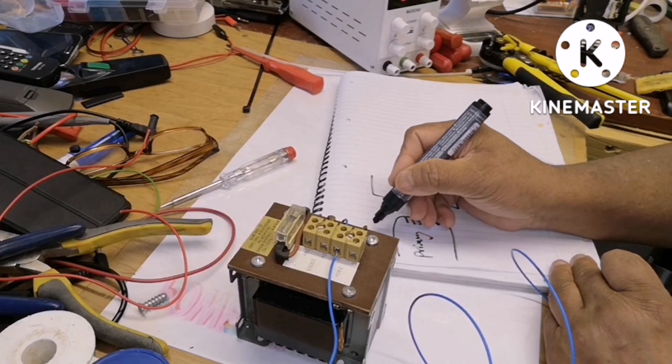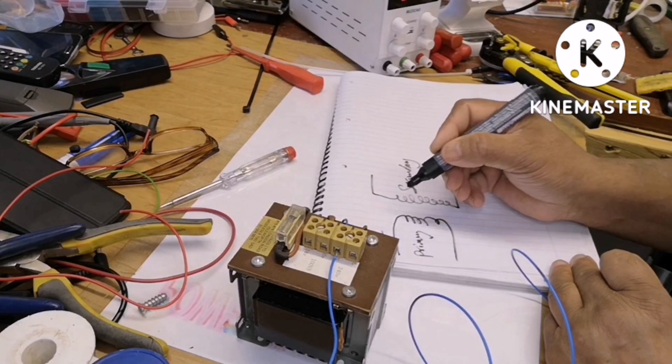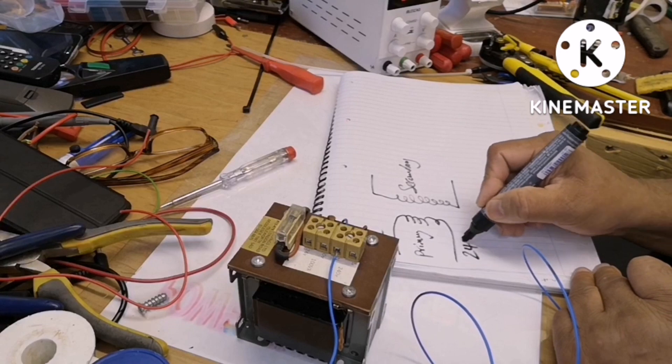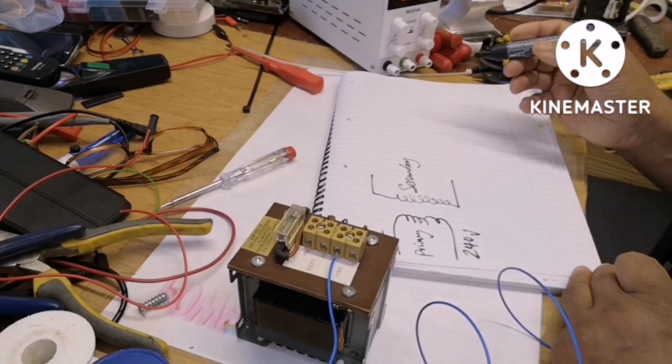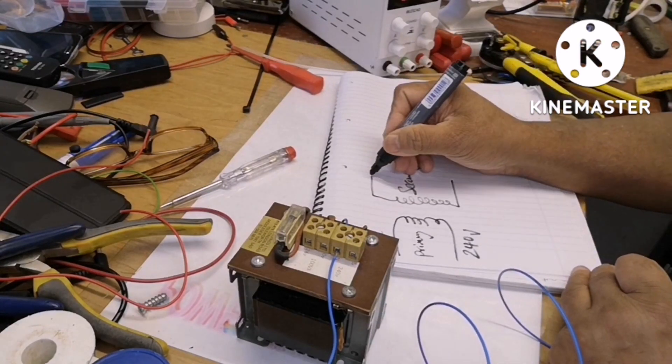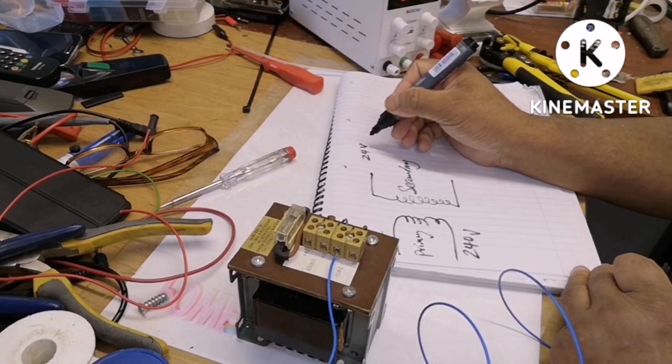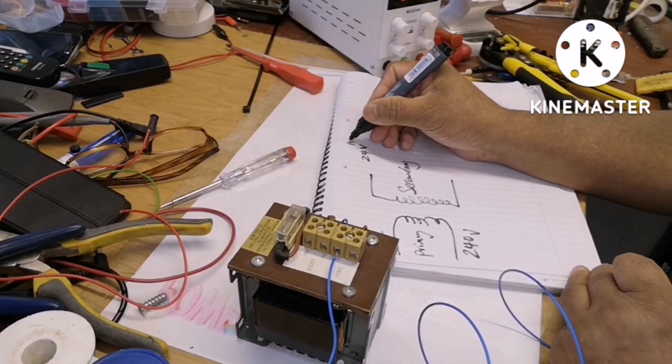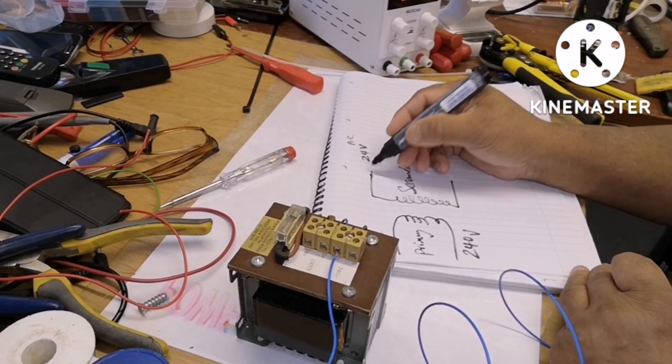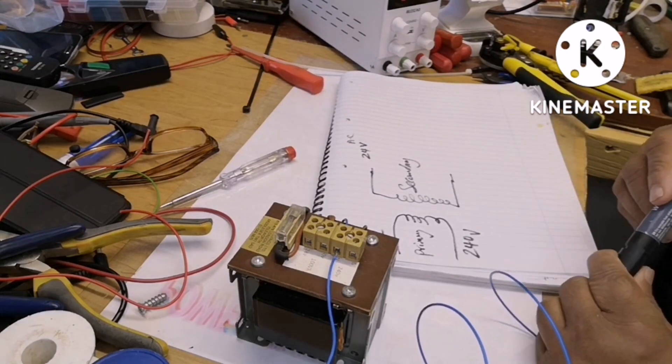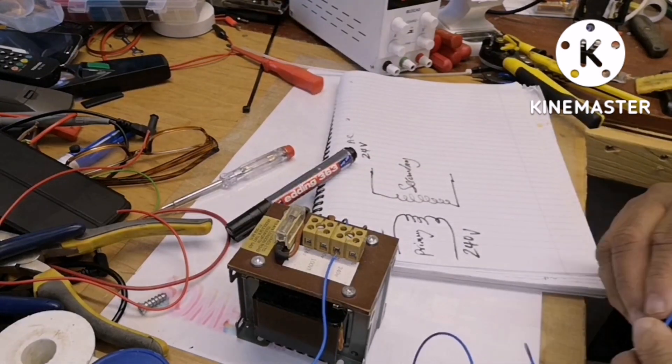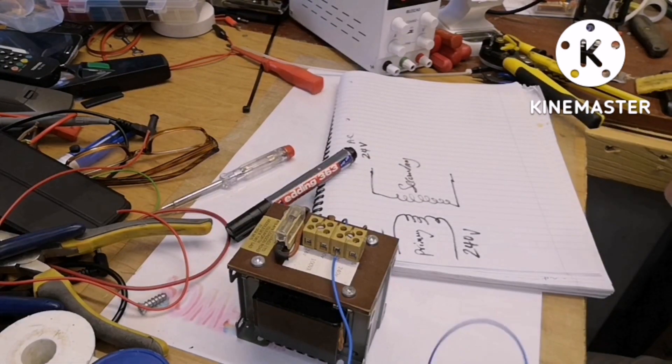Input in the primary of the transformer is 240 volts AC. Once the transformer is energized, it produces 24 volts AC on the other side, the secondary. As I explained, now I'm going to wire these primary.